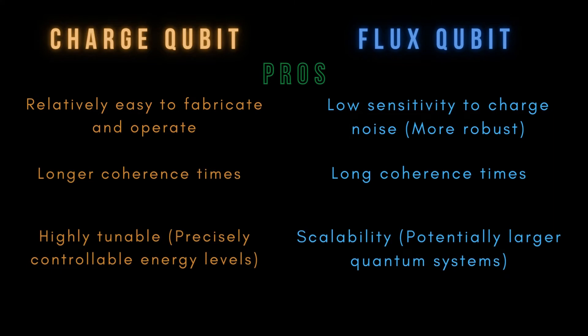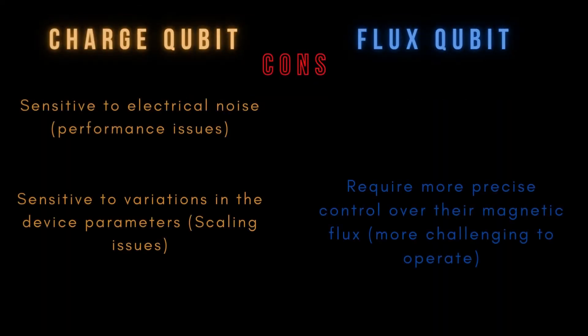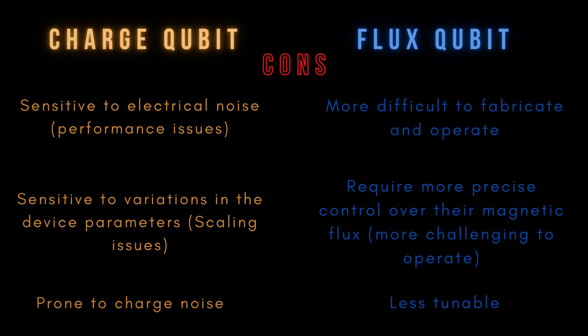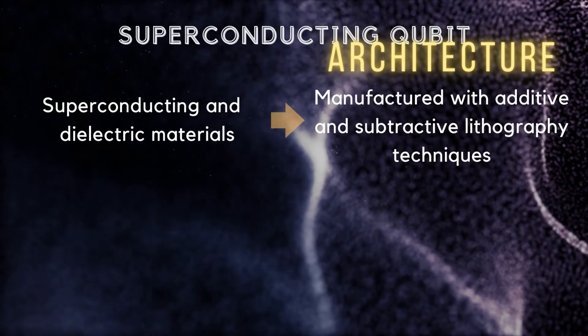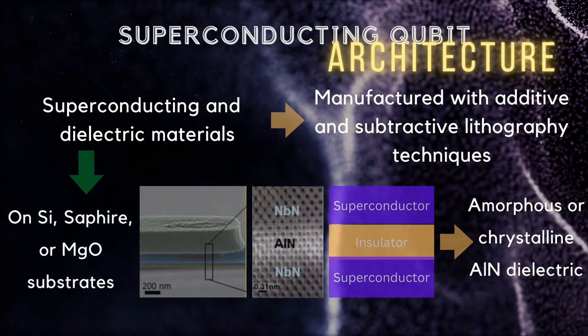Both charge and flux qubits have their own advantages and disadvantages. Charge qubits are more sensitive to environmental noise and have a shorter coherence time, but they are easier to control and have simpler readout. Flux qubits, on the other hand, are less sensitive to environmental noise and have a longer coherence time, but they are more difficult to control and have more complicated readout.